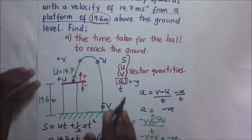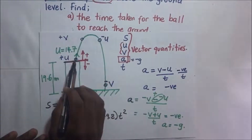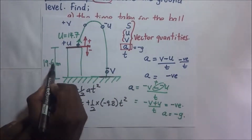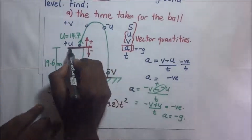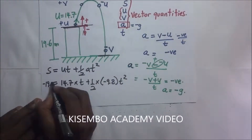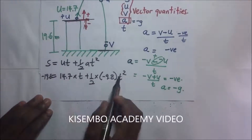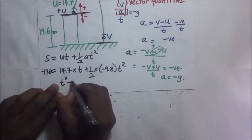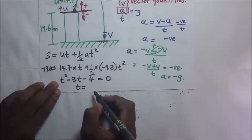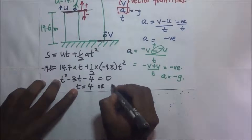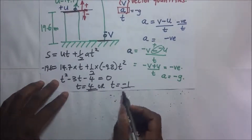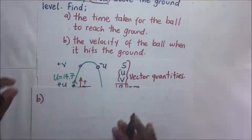The displacement s is negative 19.6 meters, because the ground is below the starting platform — the ball ends up below the point of reference. Substituting and simplifying gives the quadratic equation: t² − 3t − 4 = 0. Solving this, t = 4 or t = −1. We take t = 4 seconds as our answer, since negative time is not physically meaningful.